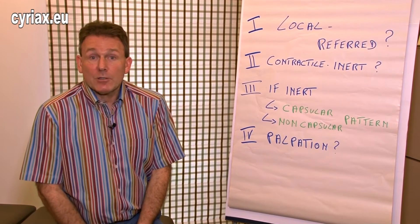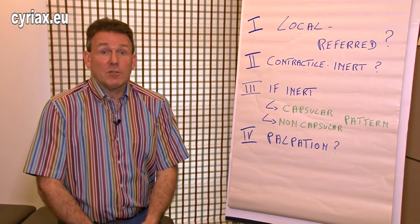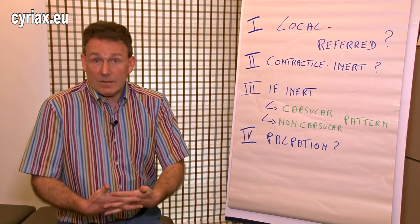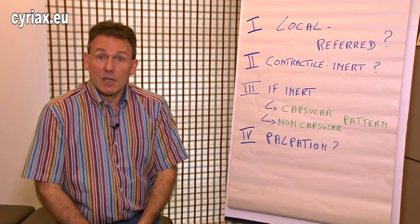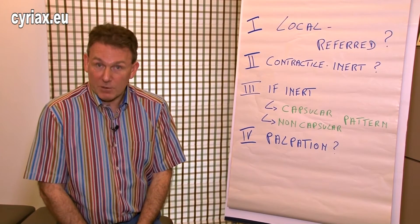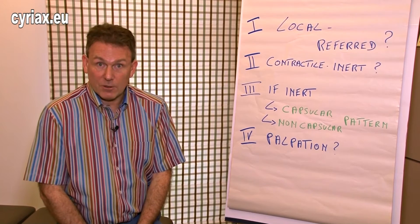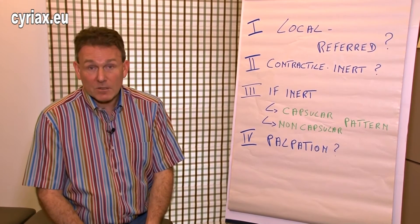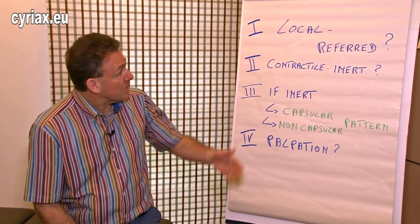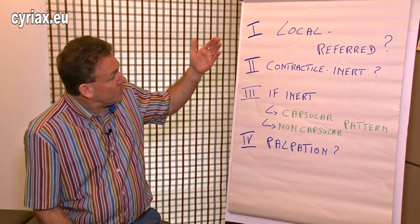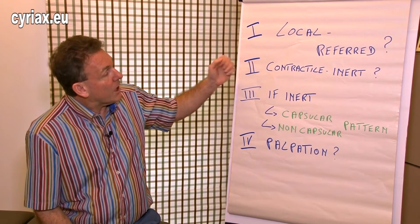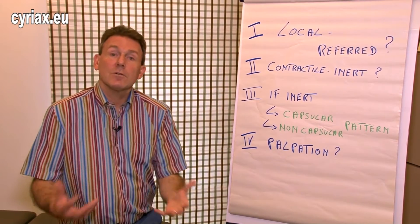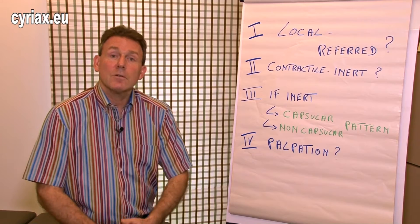The patient gave some positive answers and some negative answers. Then of course we have to interpret the test results — what did we find? That's the second step. We have to make a distinction between, on the one hand, the contractile lesion and, on the other hand, the inert lesion.